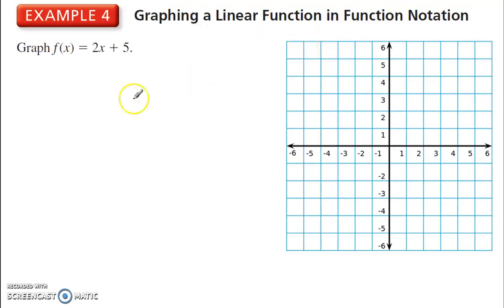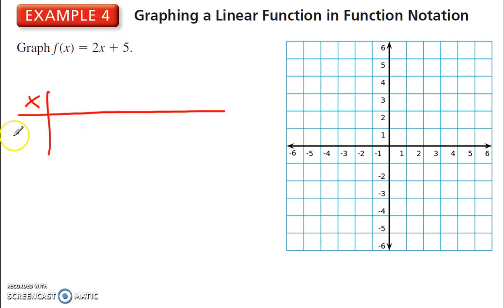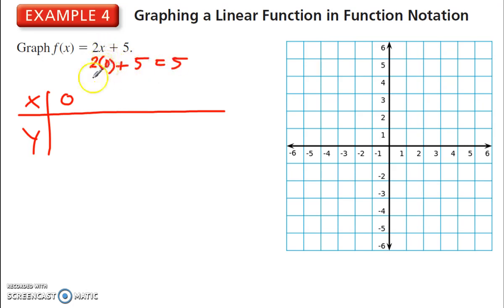If I want to graph a linear function in function notation, there are a few ways I can do this. One way is plug in and see what I get out. I'm going to do a little input-output table. Always start with an easy one like 0. Plug in 0: 2 times 0 plus 5. 2 times 0 is 0, plus 5 is 5. So when x is 0, f of x — or y — is 5. We've already found a point: the ordered pair 0 and 5.